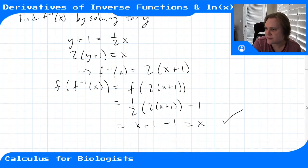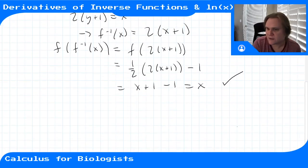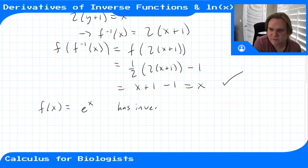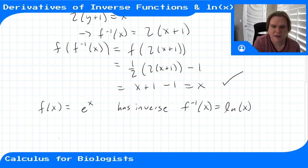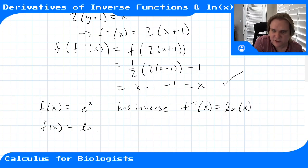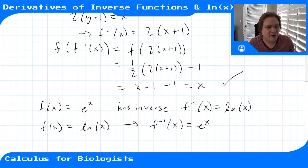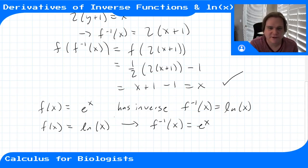Other inverses we know: f of x equals e to the x has inverse f inverse of x equals natural log of x, and the other way around — f of x equals natural log of x has inverse e to the x. Inverses are often, but not always, symmetric, so the inverse of one is the inverse of the other.